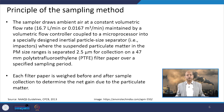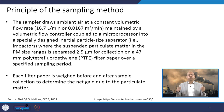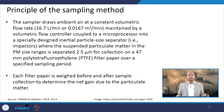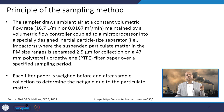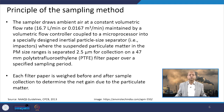The principle behind sampling of PM 2.5 is that it draws ambient air at a constant volumetric flow rate of around 16.7 liters per minute or 0.0167 cubic meters per minute, maintained by a volumetric flow controller coupled to a microprocessor, into a specially designed inertial particle size separator — also known as an impactor — where suspended particulate matter in the PM 2.5 size range is separated for collection on a 47 mm PTFE filter paper over a specified sampling period.